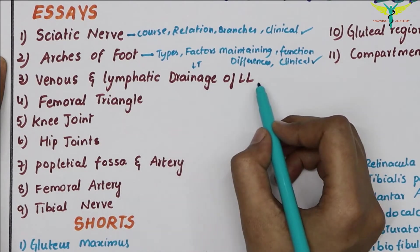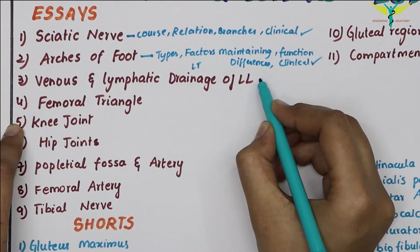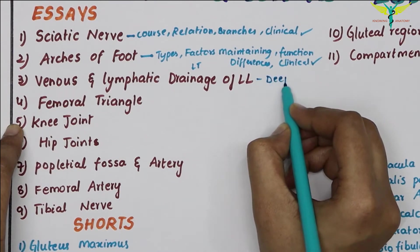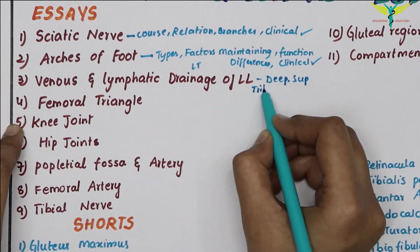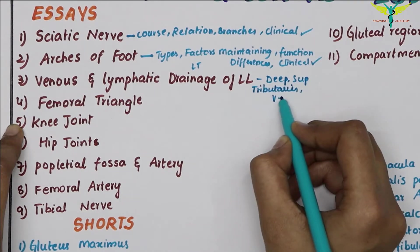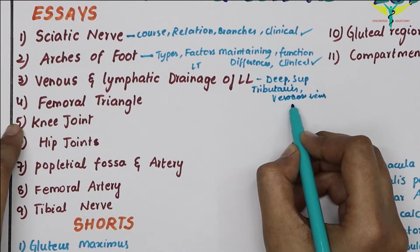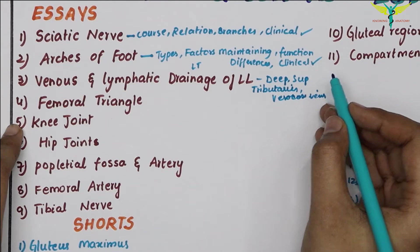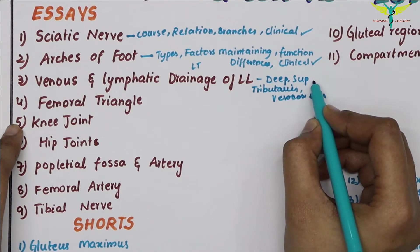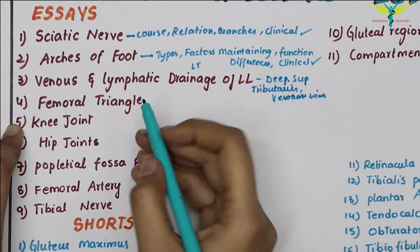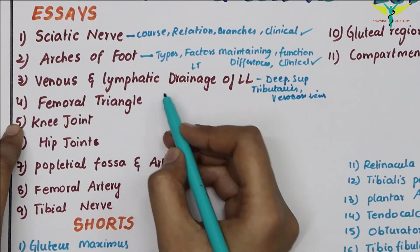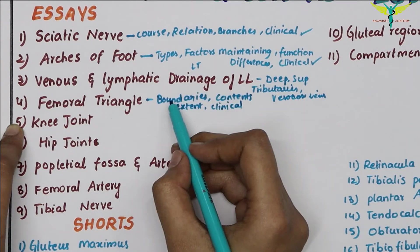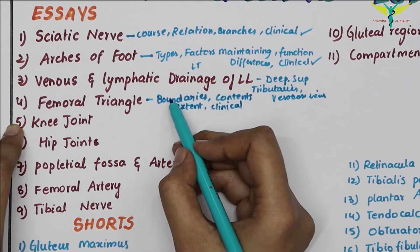The next important essay question is the venous and lymphatic drainage of the lower limb. They ask about the deep and superficial veins, their tributaries, varicose veins as the clinical aspect, and you should draw a clear diagram of the deep and superficial veins. The next question is the femoral triangle — its boundaries, contents, the femoral sheath, extent, and clinical aspects.